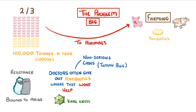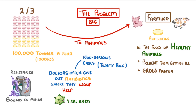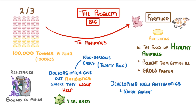The big problem though is farming — over two-thirds of that 100,000 tonnes is given to animals. Farmers put antibiotics in the food of healthy animals to prevent them from getting ill in the first place and to make them grow faster, which is basically a breeding ground for antibiotic resistance. There are loads of scientists trying to fix the problem by developing new antibiotics that work against these resistant strains, but it's proving difficult and slow.